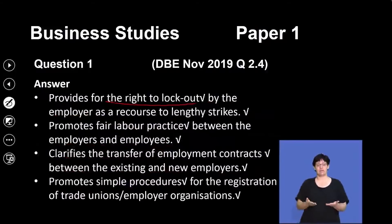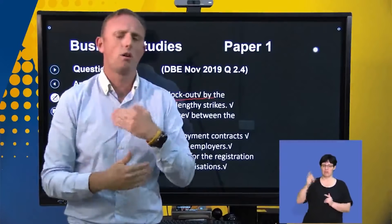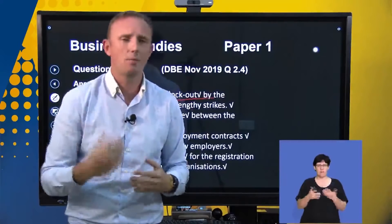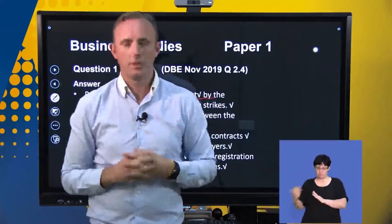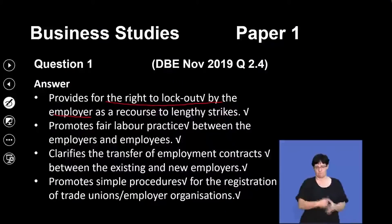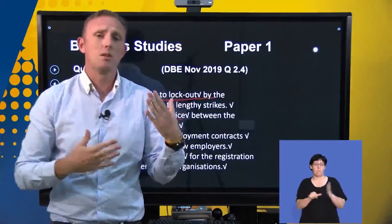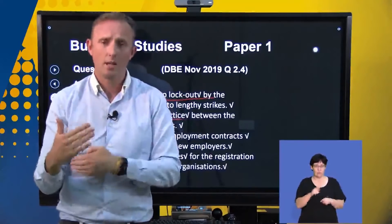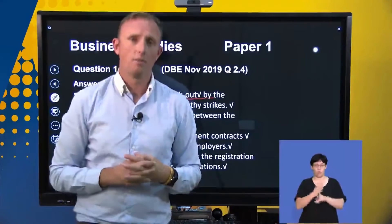It provides the right for lockout by the employer as a recourse for lengthy strikes. So if the strike has gone on for a couple of weeks or even perhaps a couple of months, the employer has the right to lock out the striking workers so that they can't come into the premises and damage any assets. It promotes fair labour practices between employers and employees, which is vital because if there are fair labour practices, there's going to be trust between the employer and the employee, and that's going to increase the productivity of the business.